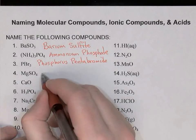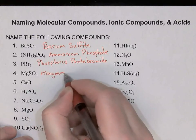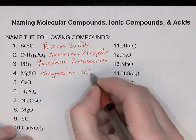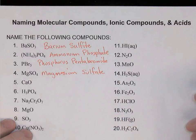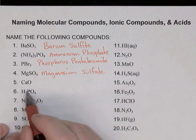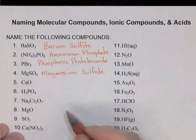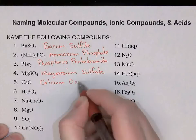MgSO4: magnesium is a metal, so this is an ionic compound. Name the metal first — magnesium — and then sulfate, which is a complex ion. Notice when you know these complex ion formulas, it's very easy to do this without checking your data booklet. CaO: calcium is a metal, so this is an ionic compound — calcium oxide.